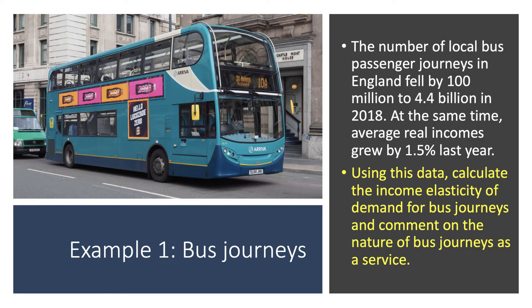There's also a category of products known as inferior goods, where the income elasticity of demand is negative — as incomes go up, people buy less. Here are two calculations to work through. The first one concerns local bus journeys in the UK. We're told that the number of journeys fell by 100 million to 4.4 billion in England in 2018, whilst at the same time incomes went up by 1.5 percent.